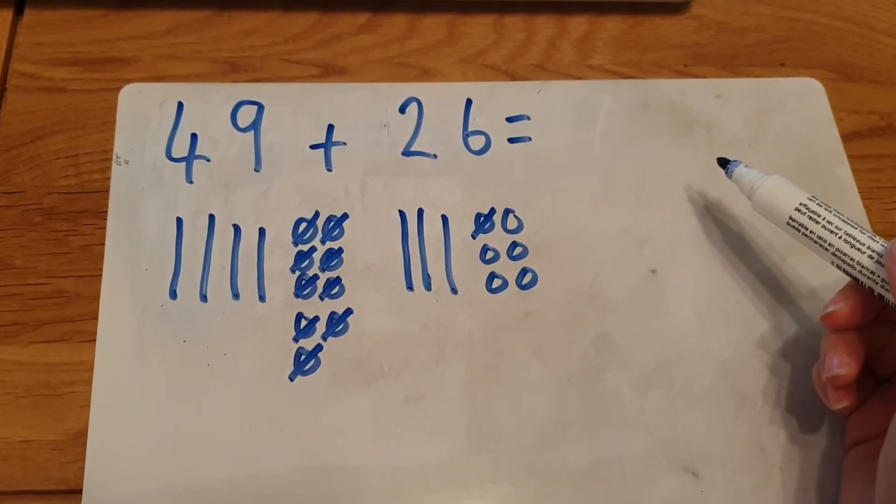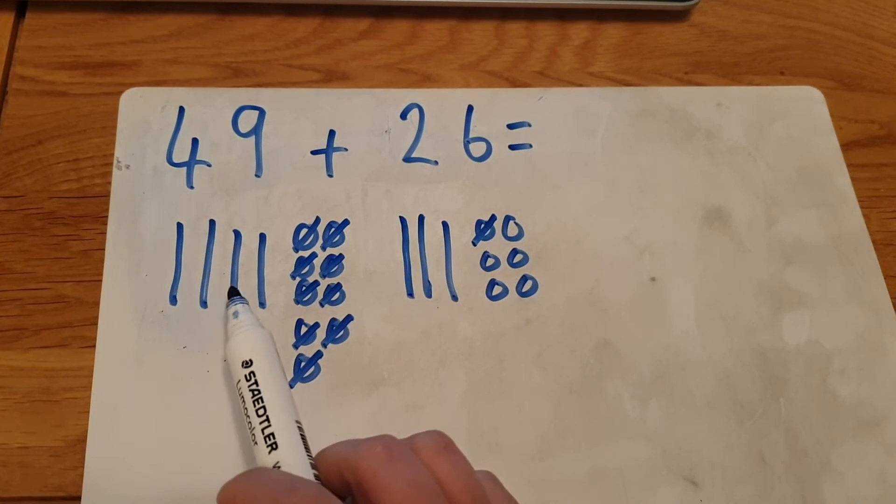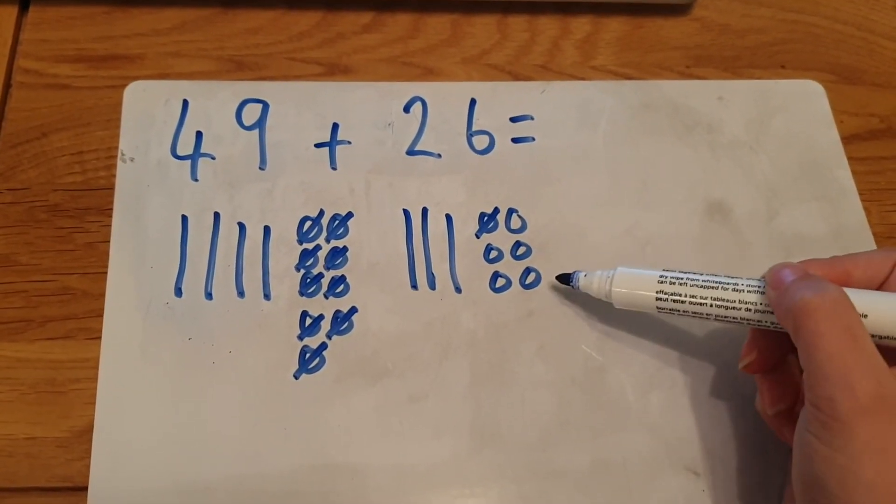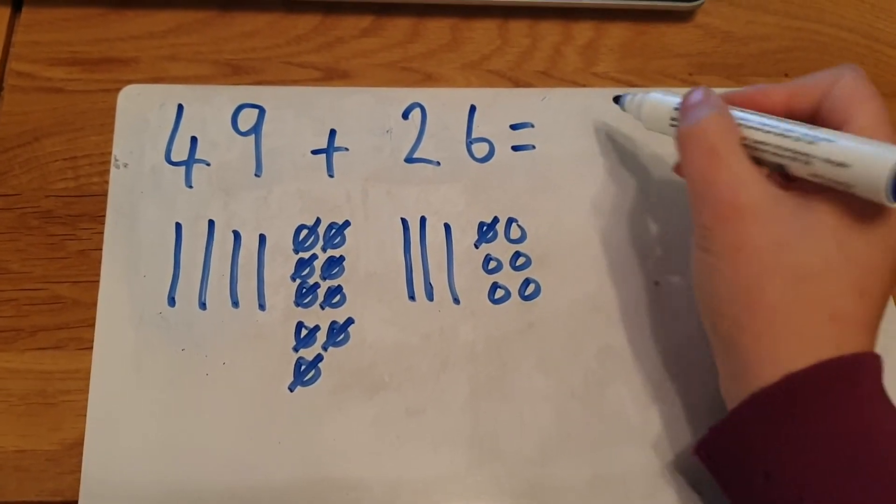Now I can count how many I've got all together. Ten, twenty, thirty, forty, fifty, sixty, seventy, seventy-one, seventy-two, seventy-three, seventy-four, seventy-five.